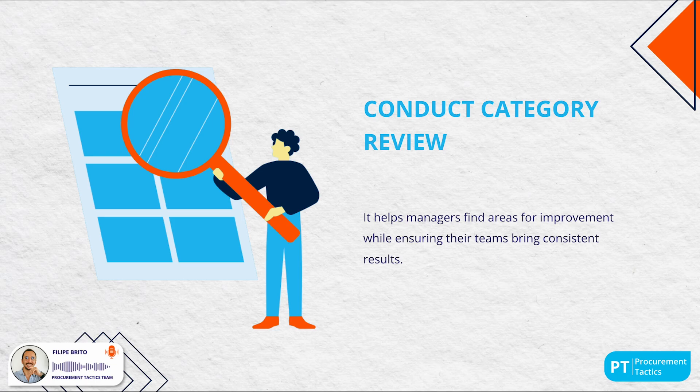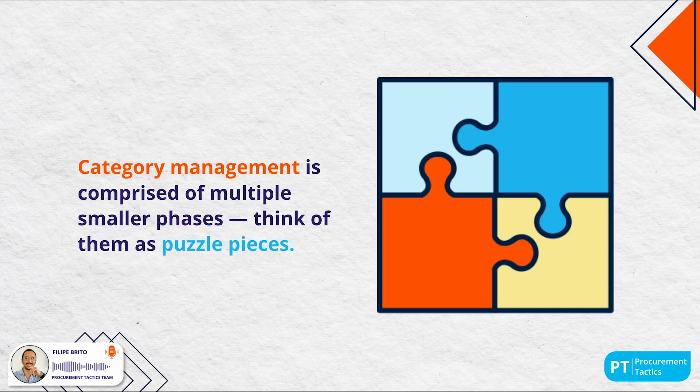The fifth key component is conducting a category review. This involves regularly tracking and measuring the performance of each category against predefined KPIs. It helps managers find areas for improvement while ensuring their teams bring consistent results. Overall, category management is comprised of multiple smaller phases — think of them as puzzle pieces that make up category management as a complete strategy.